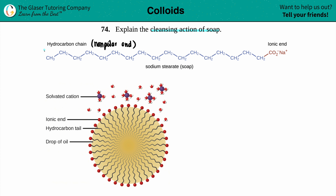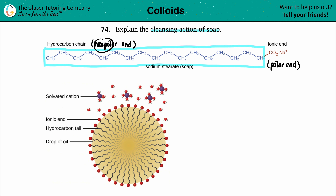One molecule of soap has a nonpolar end — it's the big end. The nonpolar end is going to be way larger than what they call the ionic end, but I like to call it the polar end as well. You can work it both ways — one is nonpolar, the other is polar. The head of the soap is the small portion that consists of the charges: CO2 minus is the carboxylic head, and it's bound with a metal — sodium in this case, sodium stearate.